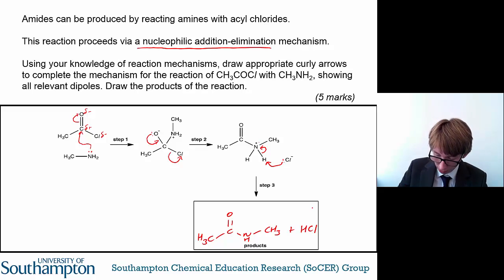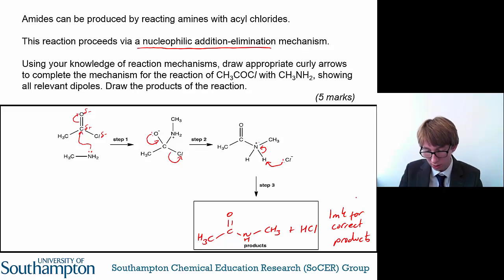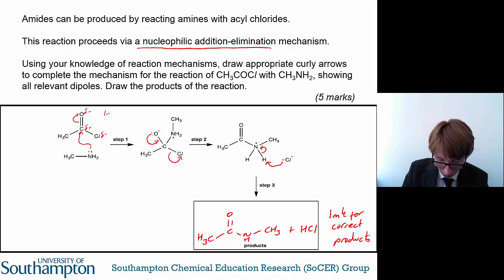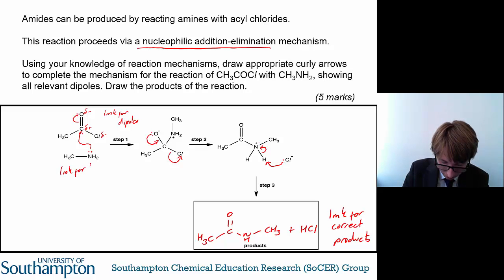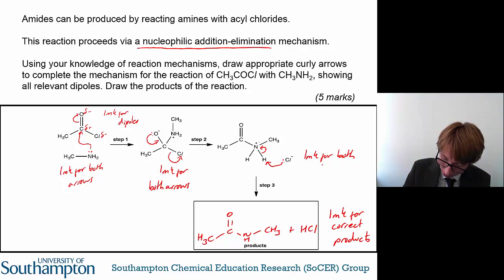This question is worth five marks. You get one mark for correct products — you need both products, you can't just have one or the other. One mark for the dipoles. One mark for both arrows in the first step. One mark for both arrows in the second step. And one mark for both arrows in the final step.